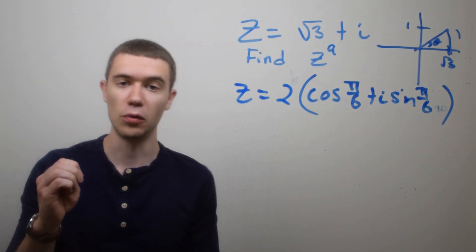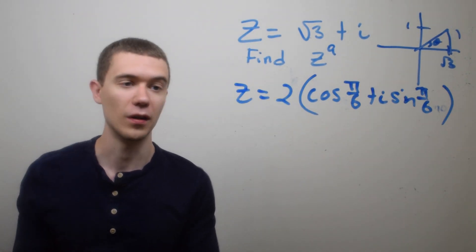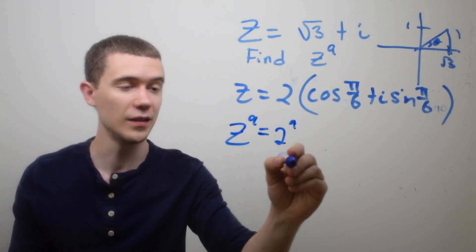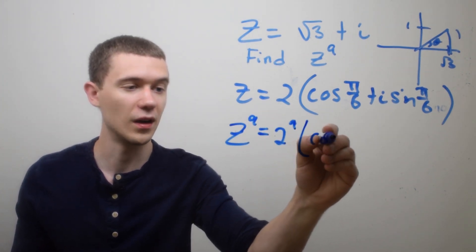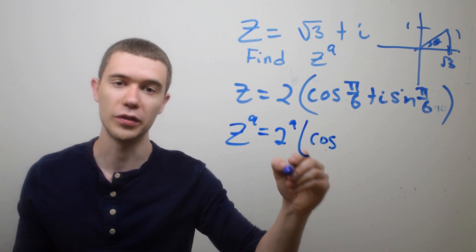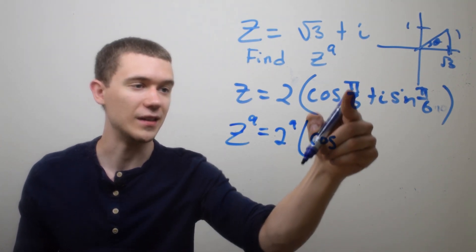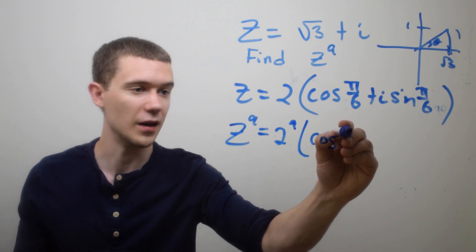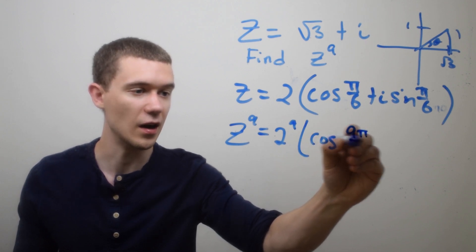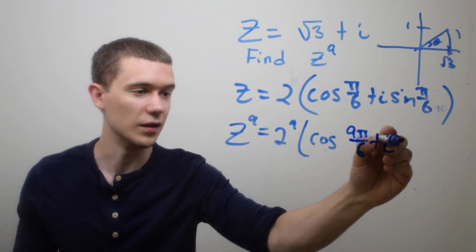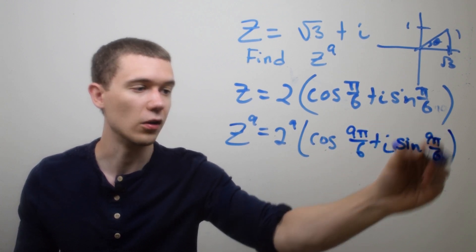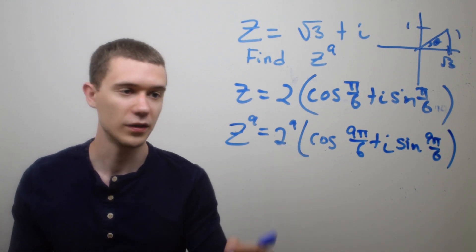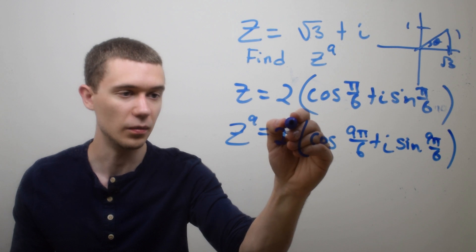Now that I have this number in polar form, I'm ready to compute its power. So z^9 should be 2^9 times cosine of—and now I introduce the de Moivre part—it's now just multiplying the argument π/6 by the 9. So this is now 9π/6 + i sin(9π/6). All I did to take the power was raise the r to the power, the modulus to the power.